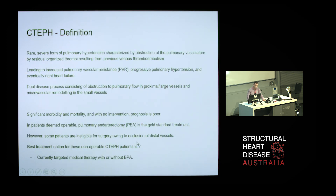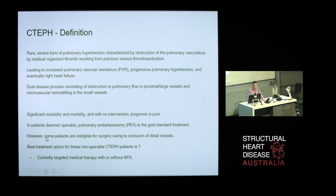CTEPH is a rare, severe form of pulmonary hypertension characterised by obstruction of the pulmonary vasculature by chronic organised thrombi. It leads to increased pulmonary vascular resistance, progressive pulmonary hypertension, and eventually right heart failure. It is a dual disease process consisting of obstruction to pulmonary flow in the proximal and large vessels, as well as microvascular remodelling in the small vessels. It has significant morbidity and mortality with poor prognosis if untreated. For operable patients, pulmonary endarterectomy is recommended; for those who are not operable, the best treatment is targeted medical therapy with or without BPA.